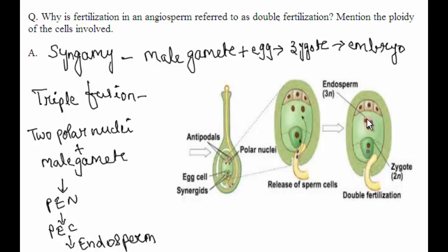The primary endosperm nucleus grows to form the primary endosperm cell, which then divides mitotically to form the endosperm. So the male gamete fuses with two polar nuclei to form the triploid primary endosperm nucleus, which develops into the endosperm. The endosperm provides nutrition to the developing embryo. Triple fusion is also called vegetative fertilization.